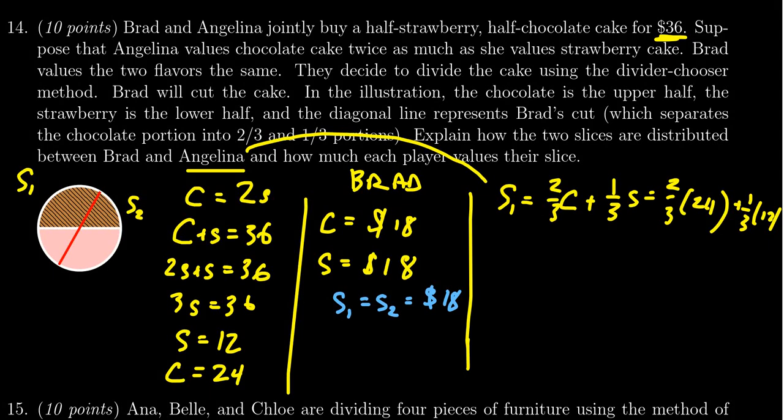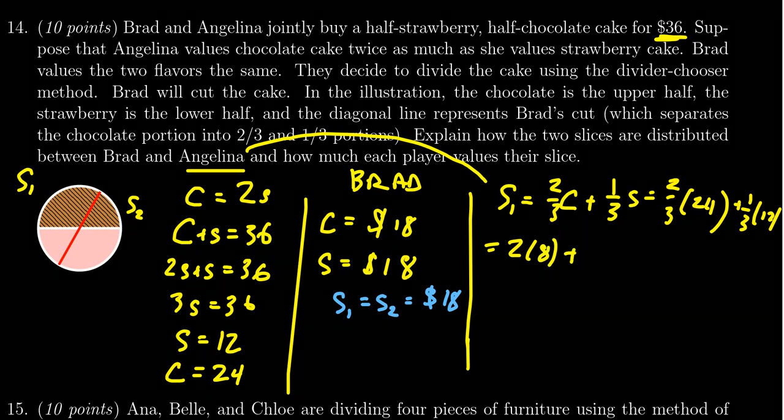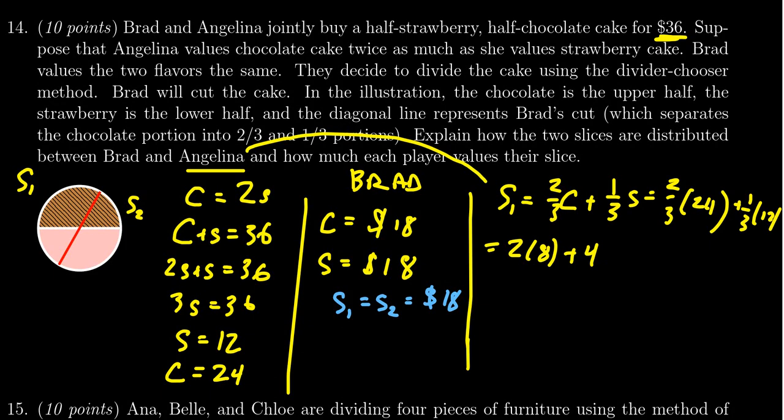So simplifying those things, 3 goes into 24 eight times and 3 goes into 12 four times there. 2 times 8 is equal to 16 plus 4. She values the first slice at $20.